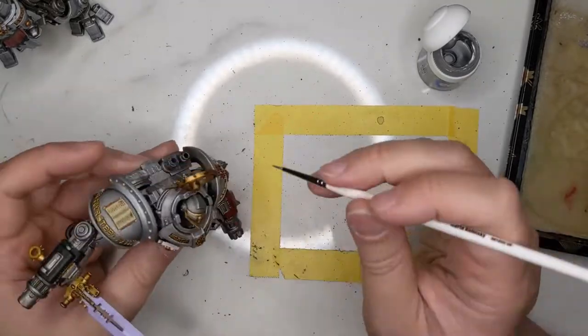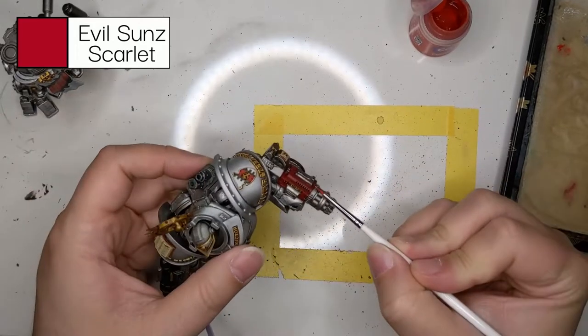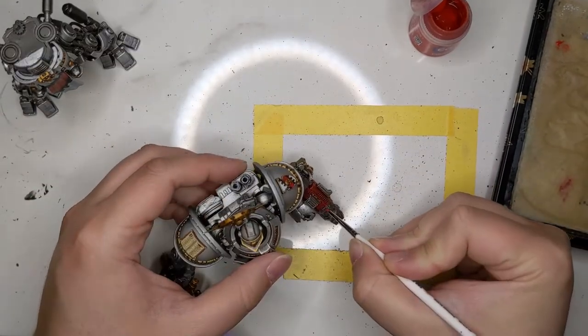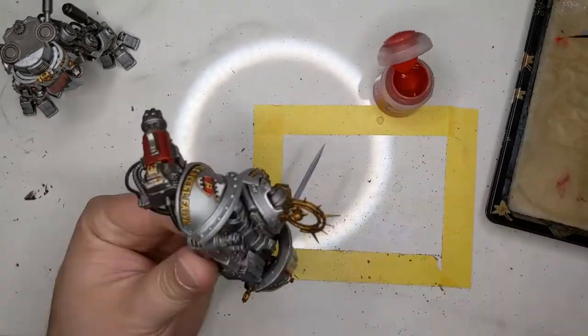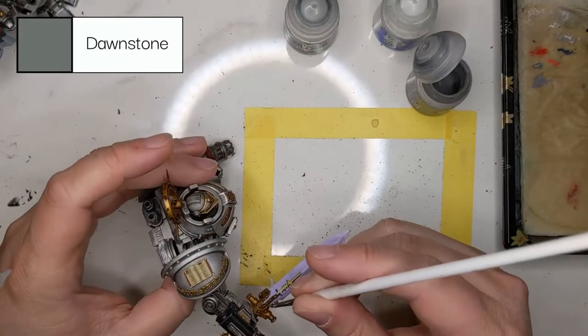Now we're doing the same thing with Evil Sunz Scarlet here on the gatling silencer on the left arm and on the tabard, just a little bit to help add some contrast.